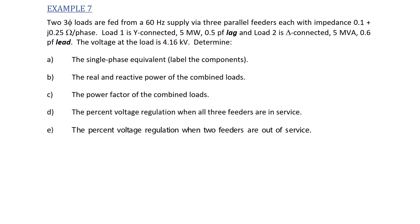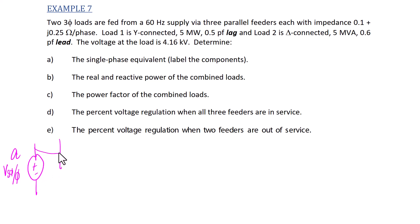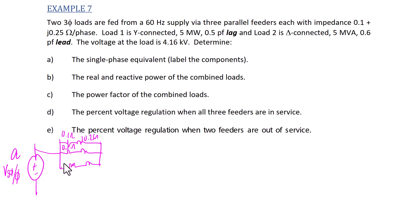The first thing we're going to do is draw the equivalent circuit for one phase. Here's our voltage source for one phase. The three parallel feeders are each represented as a resistor and inductor in series — all three in parallel. Each feeder has 0.1 ohms resistance and J0.25 ohms reactance.